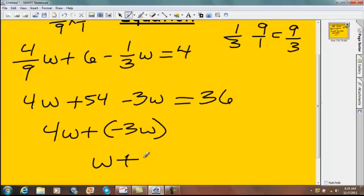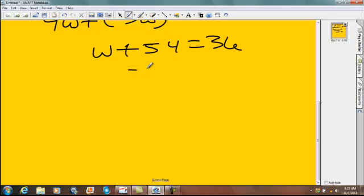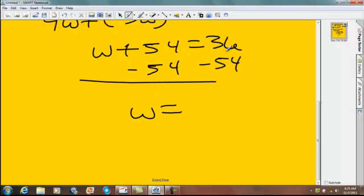Up in the equation, we just had a 54 left over, equals 36. Now we do step 2 in the multi-step equation, which is isolate the variable. Subtract 54 from each side. W equals 36 minus 54.